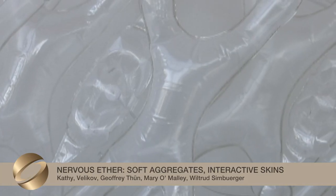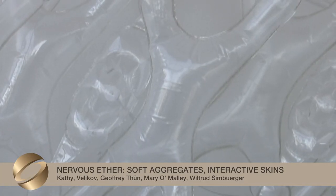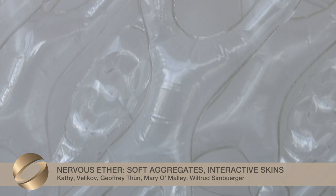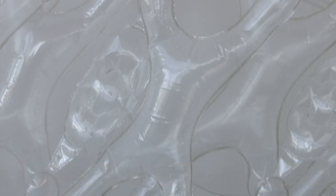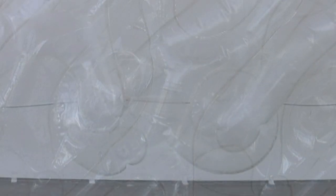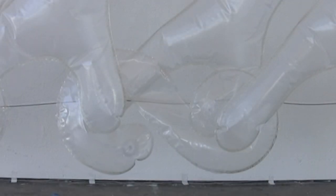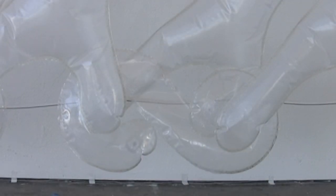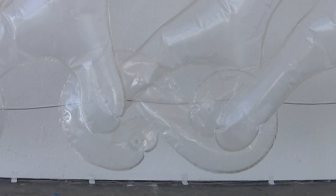Nervous Ether is a prototype installation of a spatial envelope consisting of an aggregate cellular pneumatic weave that registers and communicates remote environmental information, while also interacting with inhabitants.